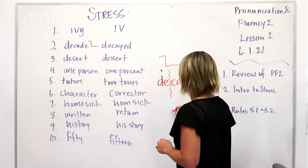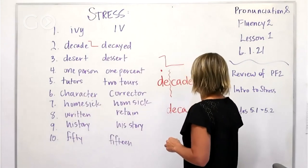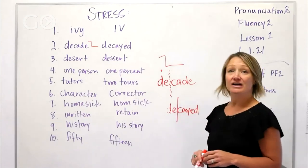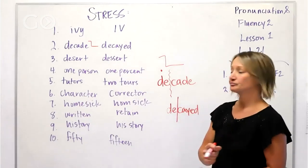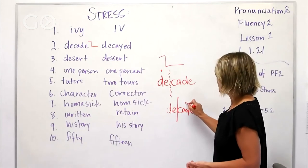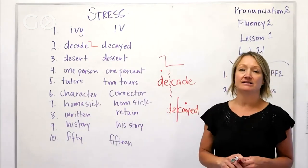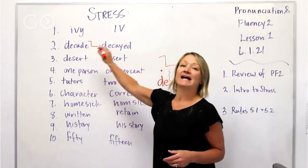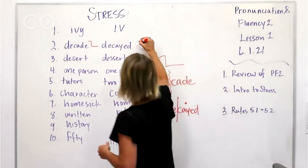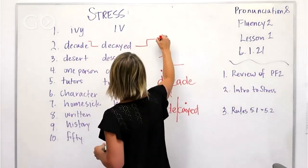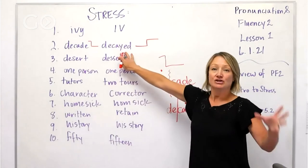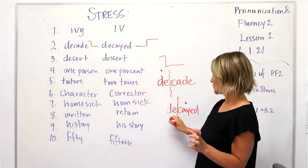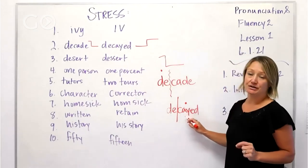Versus decayed, decayed. If we separate that there as well, decayed, you listen to me say, we're stressing that second syllable. So decade and decayed, decayed. So this one is actually a really good example because what happens - we have to pay attention to what happens in unstressed, what happens here and what happens here.